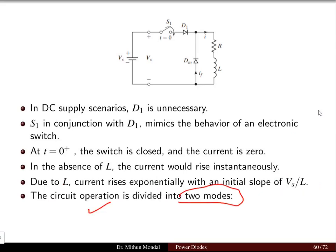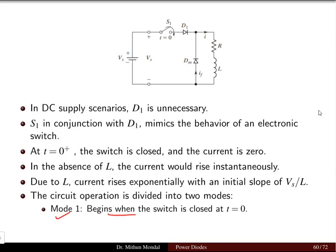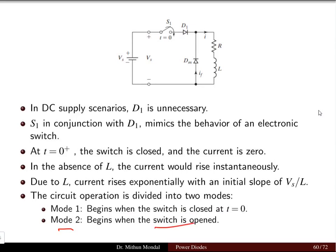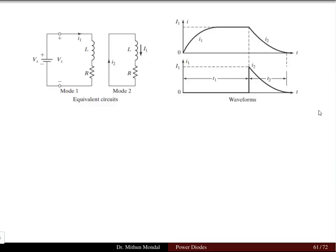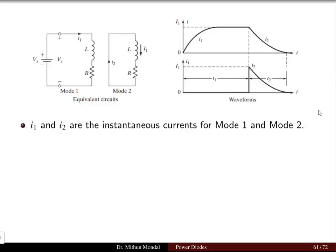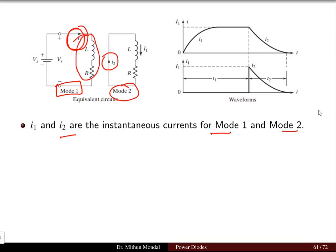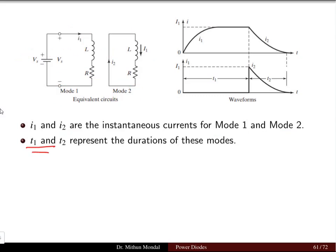The circuit operation is divided into two important modes. Mode 1 begins when the switch is closed at t equal to zero; Mode 2 begins when the switch is opened. The current I1 is the instantaneous current for Mode 1, and current I2 is the instantaneous current for Mode 2. In Mode 1, the switch is closed so you have the RL load along with the source. In Mode 2 there is no source because the switch is open. T1 and T2 represent the duration of these respective modes.